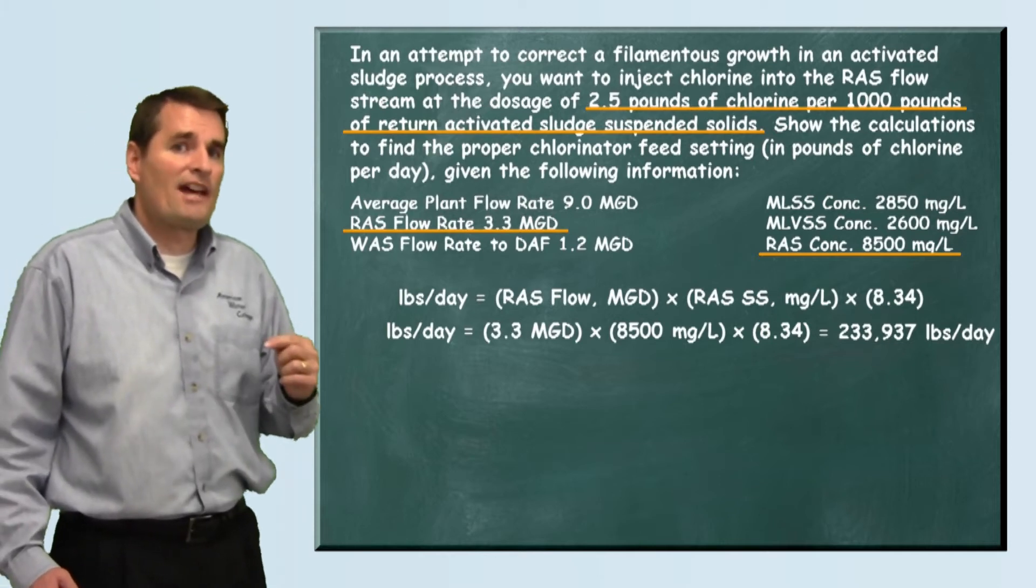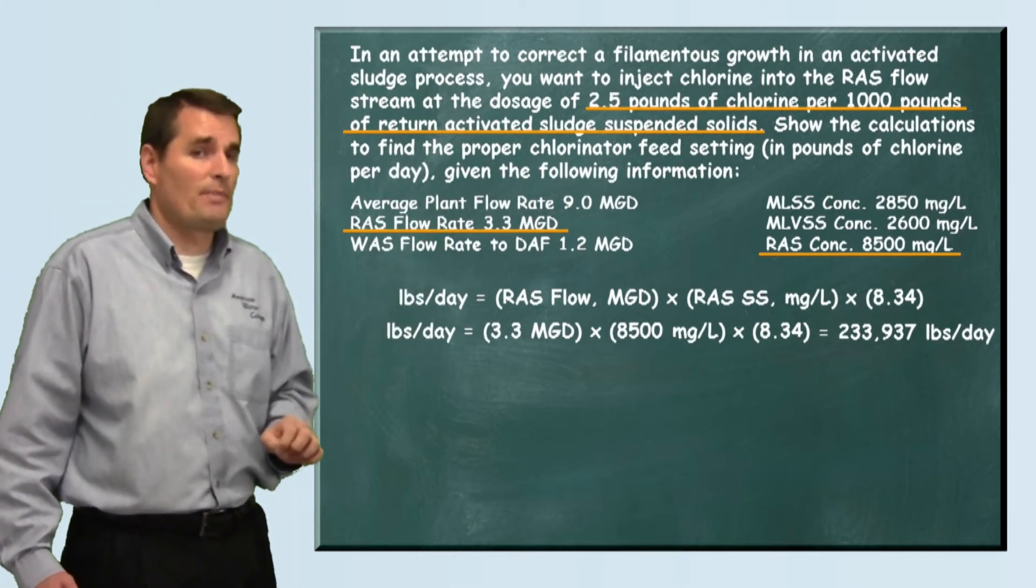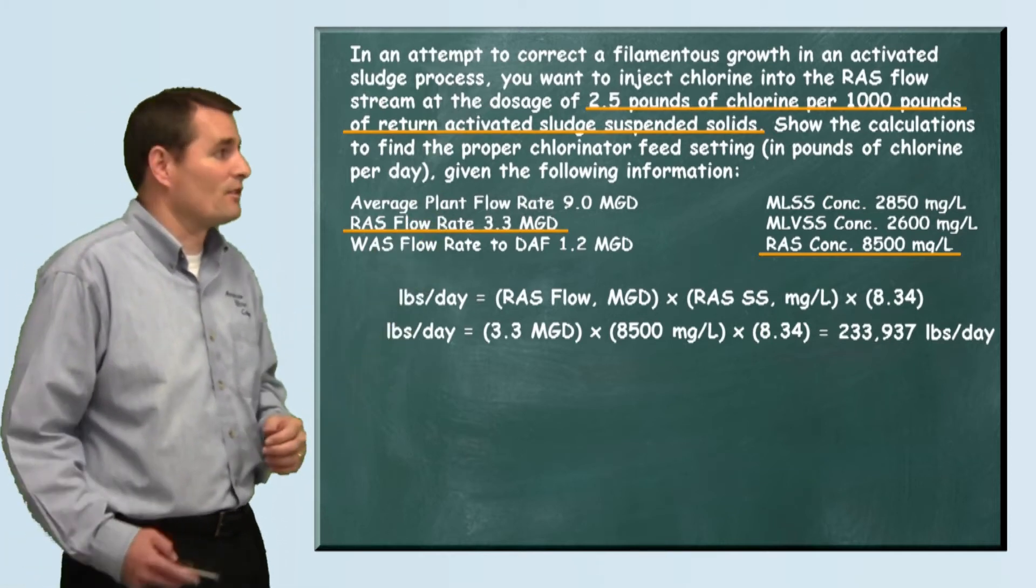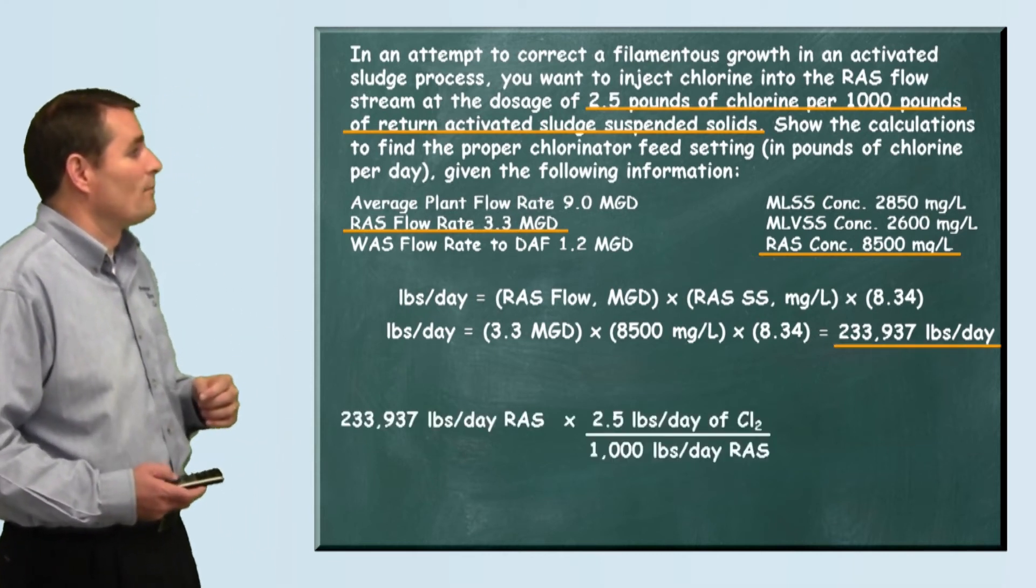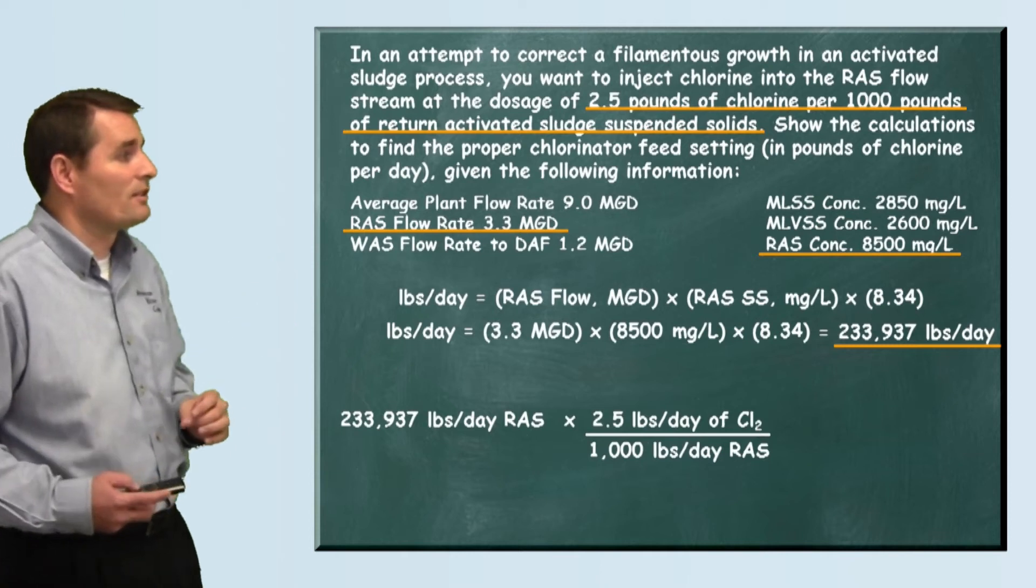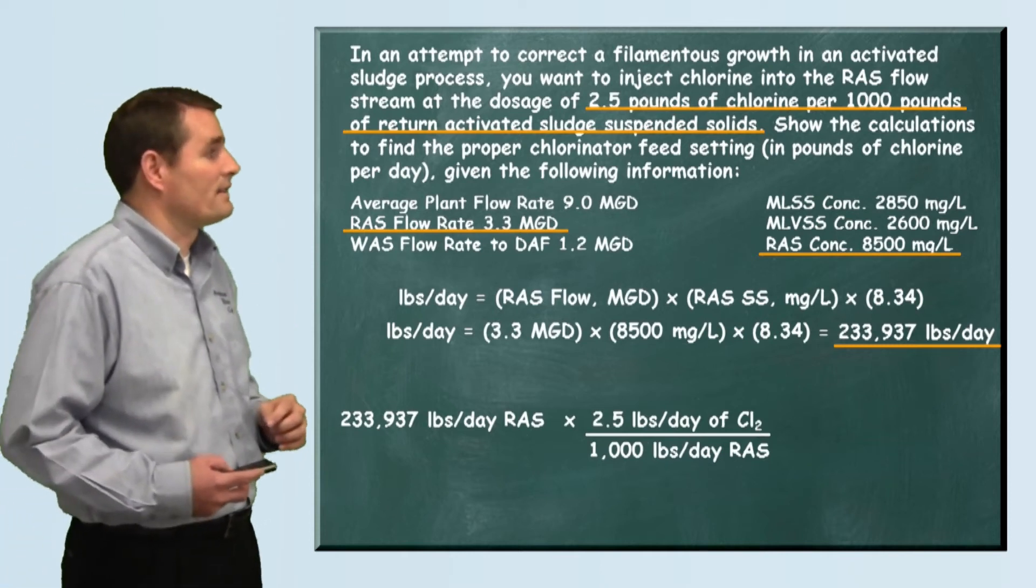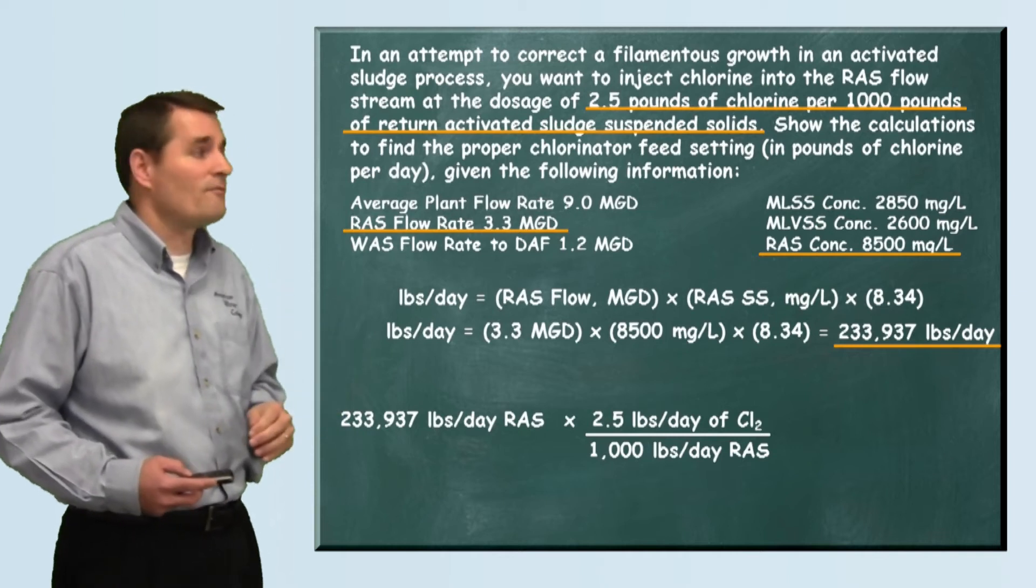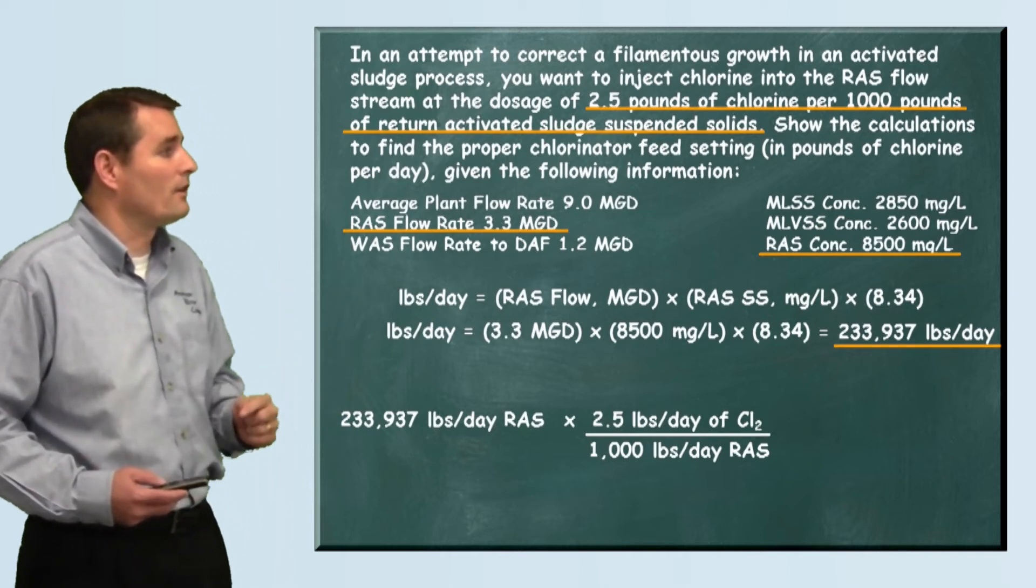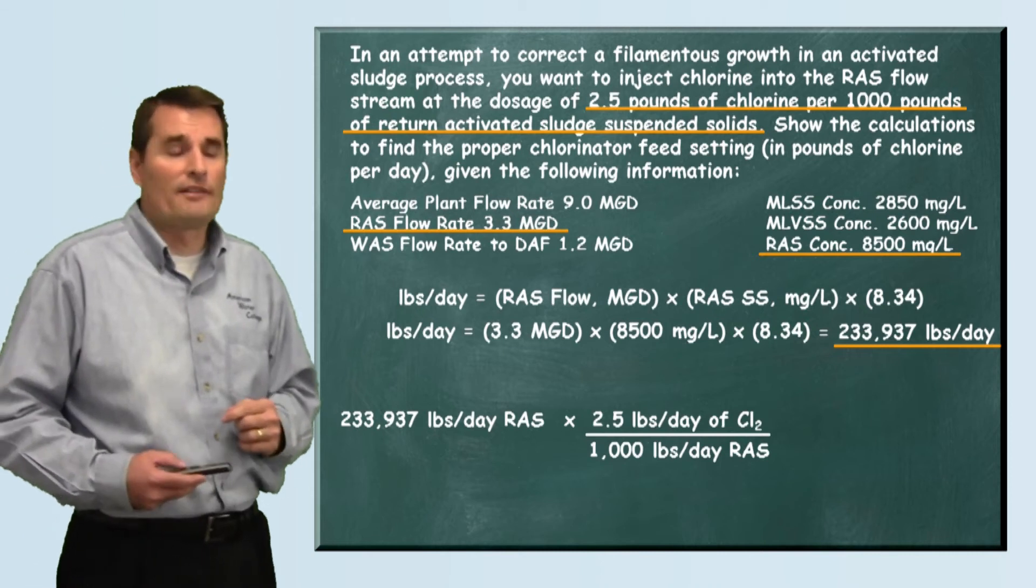Now we want to add two and a half pounds for every thousand pounds per day of return flow. So using this as our basis, we're basically going to take our 233,937 pounds per day and multiply it by the 2.5 pounds of chlorine per 1,000 pounds per day of RAS.